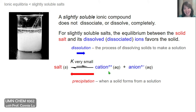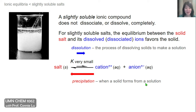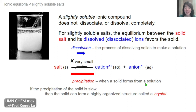On the other hand, going backwards in this reaction, where you have a solution of ions that can then form a salt, this is called precipitation, where a solid can form from a solution. And if the precipitation of the solid is slow and controlled, then the solid can actually form in a highly organized structure, which we would call a crystal.